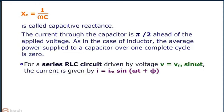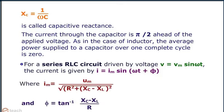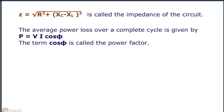For a series RLC circuit driven by voltage V equals Vm sin ωt, the current is given by I equals Im sin (ωt plus φ), where Im and φ have the values as shown and Z is called the impedance of the circuit. The average power loss over a complete cycle is given by VI cos φ. The term cos φ is called the power factor.